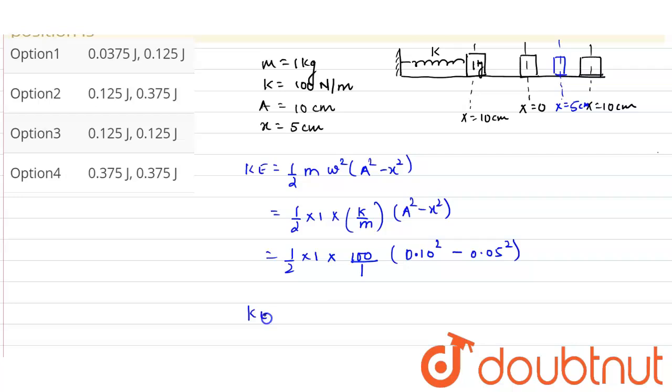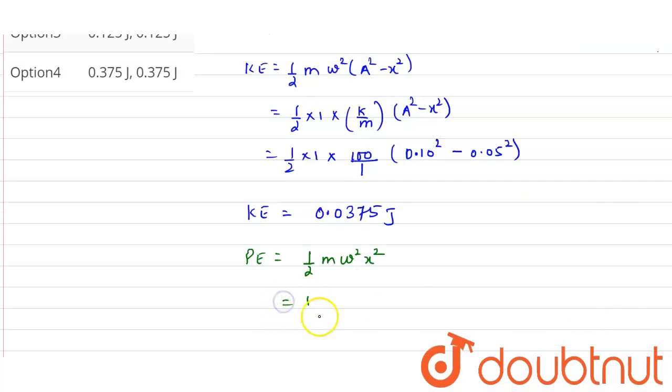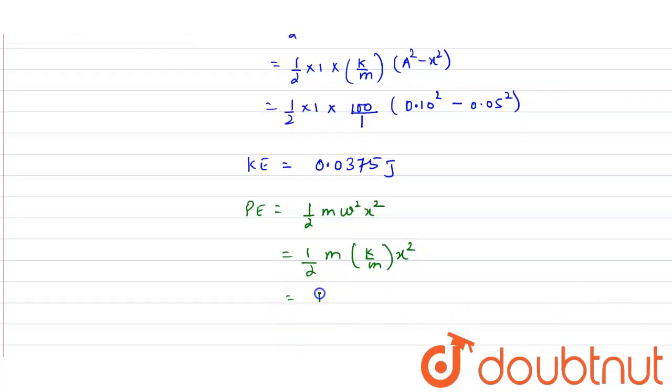Now the potential energy is given as half m omega square x square. Now substitute the values: half m omega square is k by m into x square, so it will be half k x square.